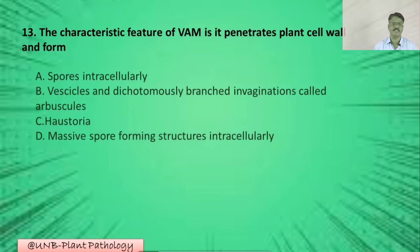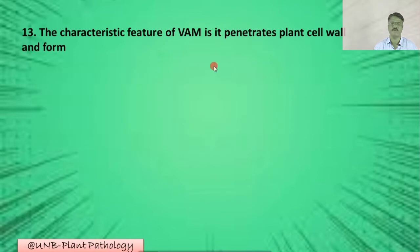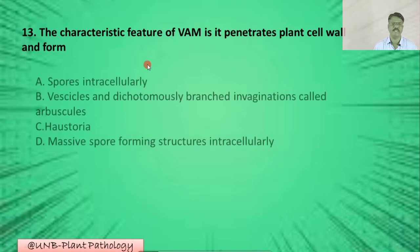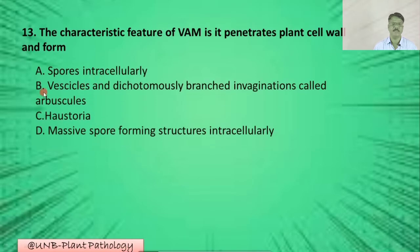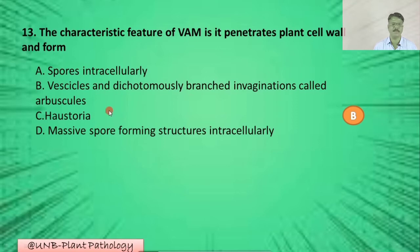Question number thirteen: The characteristic features of VAM — A: it penetrates plant cell wall and forms spores intracellularly; B: vesicles and dichotomously branched invaginations called arbuscules; C: hausteria; D: massive spore-forming structures intracellularly. The correct option is B: vesicles and dichotomously branched invaginations called arbuscules.